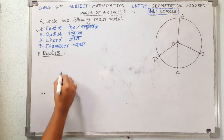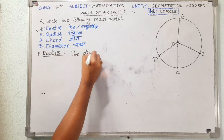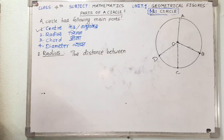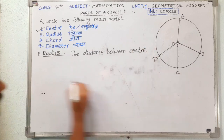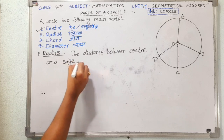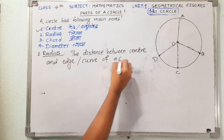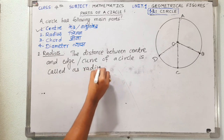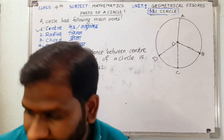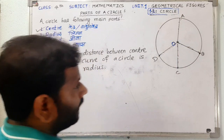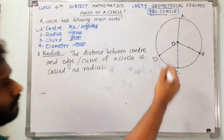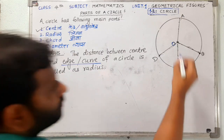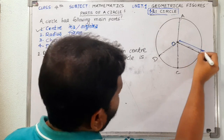Take the definition: the distance between the center and the edge or curve of a circle is called the radius. The center in the diagram is O, and the points located on the curve are A, B, C, D. So the distance from O to B is the radius; from O to C is also the radius; from O to A is also the radius.